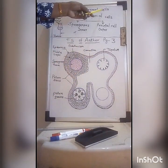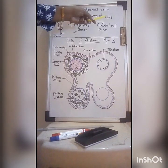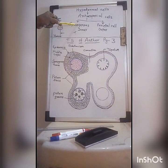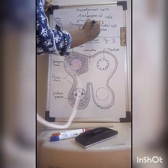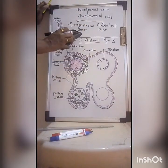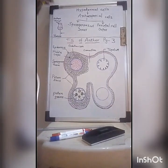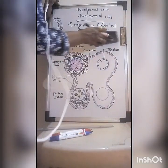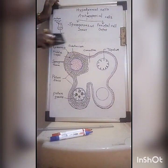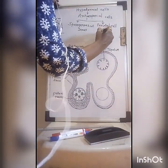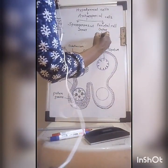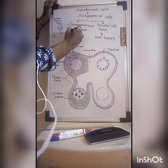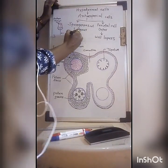A few hypodermal cells of the anther get transformed into archesporial cells. These archesporial cells will further divide into an inner sporogenous cell and an outer parietal cell. The parietal cells will then form the wall layers of the anther, and the sporogenous cell will form the sporogenous tissue.